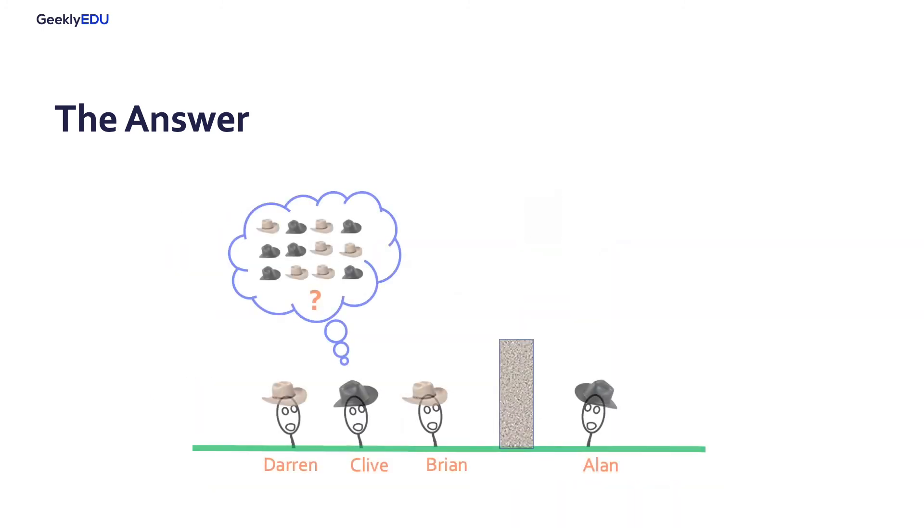Remember the possible combinations Clive thought about? He also knows that if Darren happens to see two hats of the same color in front of him, he would say something. But because he didn't,